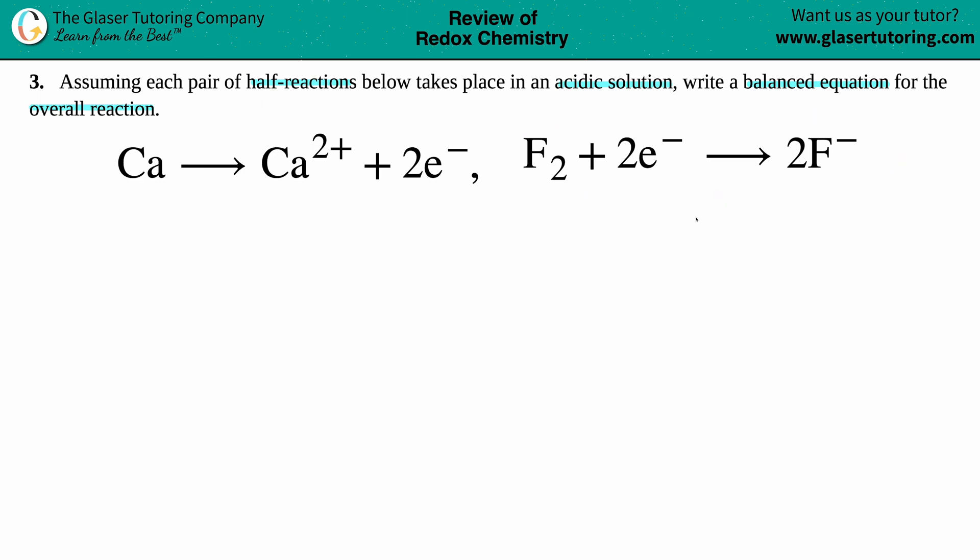Instead of reading from left to right, it's much easier to see them top to bottom. It doesn't matter which one you put on top. So I'm going to say I have calcium which yields Ca²⁺ plus the two electrons, and then we have F₂ plus the two electrons, which yields two F⁻.